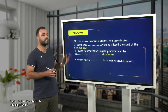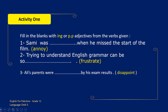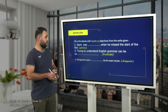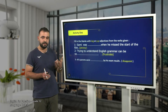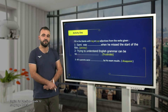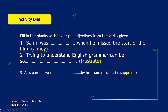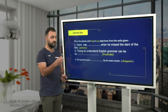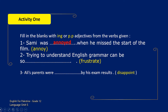Activity one: fill in the blanks with the -ing or the past participle form of adjectives from the verbs given in brackets. Please take two minutes, read these three sentences, and try to decide whether the -ing or the past participle form is needed. Good job! Let's check your answers. Start with sentence number one: Sammy was — we have to use the form of 'annoy' — when he missed the start of the film.